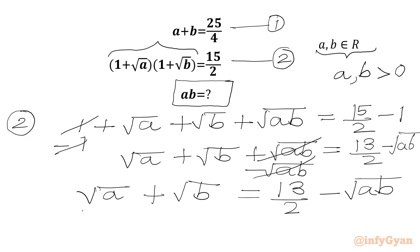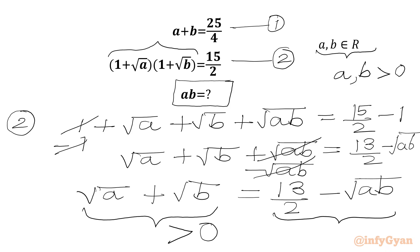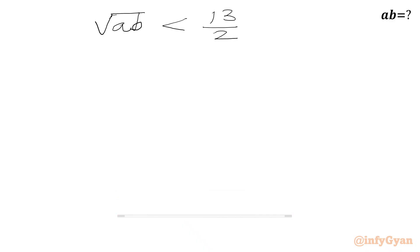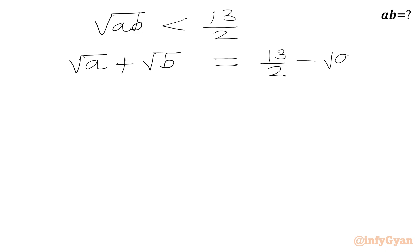Since we have a sum of two square roots on the left-hand side, this quantity must be positive. Therefore the right-hand side must also be positive, meaning √(ab) must be less than 13 over 2 for real solutions. We now square both sides of √a plus √b equal to 13 over 2 minus √(ab).